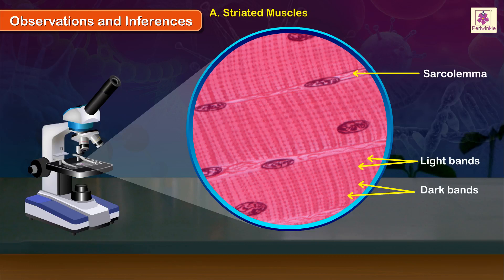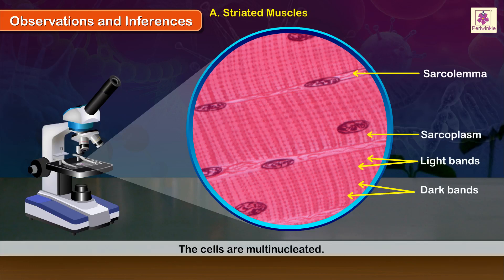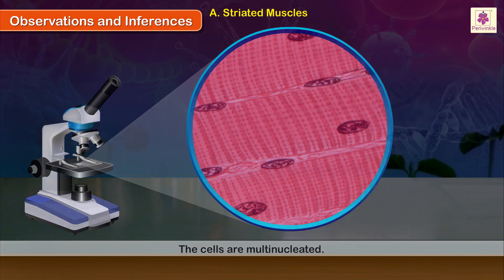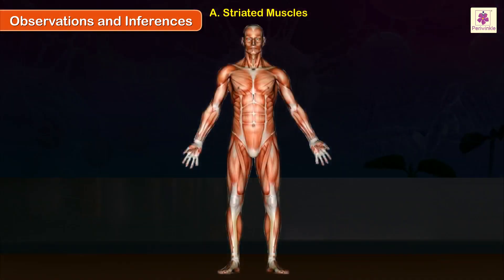Within the cell membrane lies the cytoplasm, which is called the sarcoplasm. The cells are multinucleated; the nuclei lie towards the periphery of the muscle fiber. Striated muscle fibers occur in the skeletal muscles.